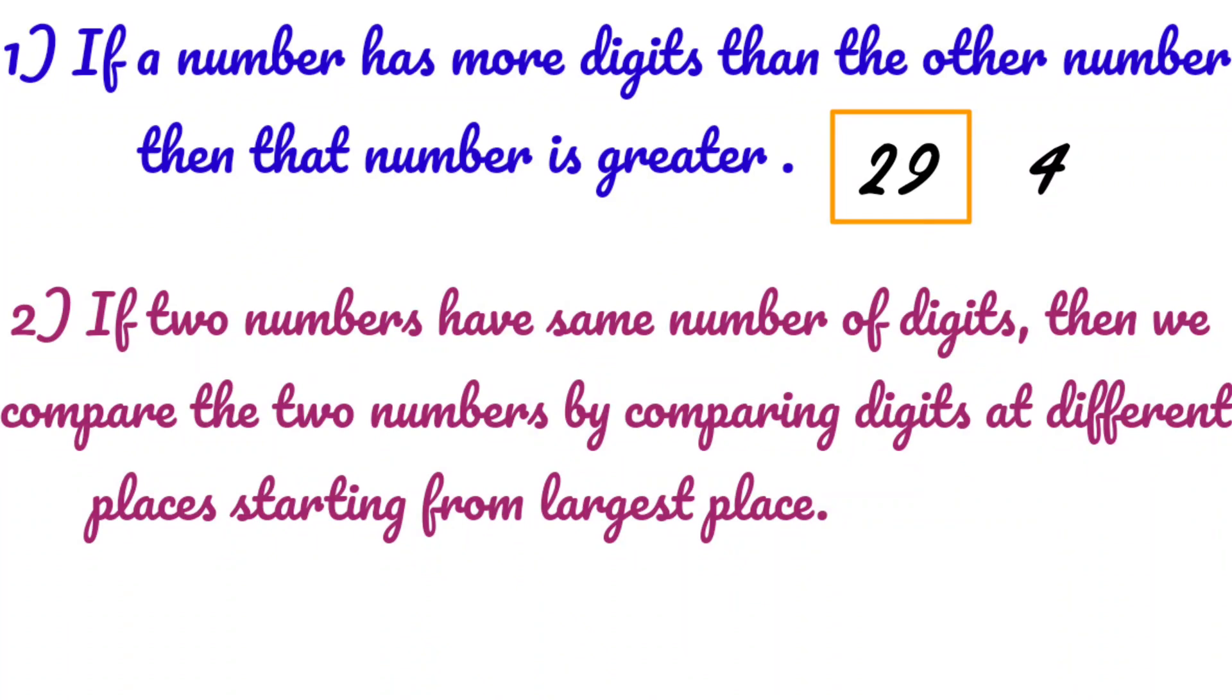If two numbers have same number of digits then we compare the two numbers by comparing digits at different places starting from the largest place.